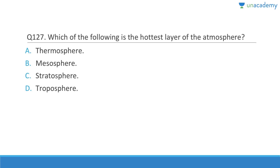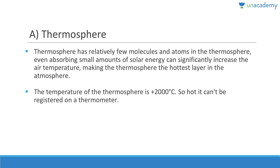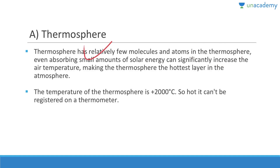The hottest layer of the atmosphere is the thermosphere — more than 2000 degrees Celsius — but you cannot feel the heat because there are very few molecules to carry it. The thermosphere has relatively few molecules and atoms; even absorbing small amounts of solar energy can significantly increase air temperature. However, you would not feel very hot there because conduction requires dense air, and the air is very rarefied.